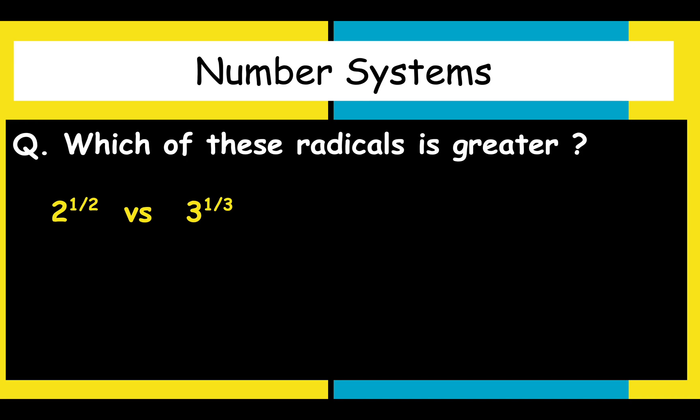So, then what we will do? We will do some operation on LHS as well as RHS. We will raise both to power of 6. Why? Because 6 is a LCM of 2 and 3.